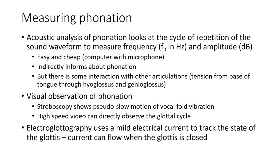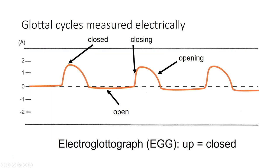You can also track the state of the glottis using electroglottography. In electroglottography, a very mild electric current is passed across the glottis using electrodes placed on the surface of the neck. When the glottis is closed, more electricity can flow, and when the glottis is open, no electricity flows. The peaks on the output curve indicate where the vocal folds are maximally closed during the glottal cycle, while the troughs represent the glottis being relatively open. So we can look at the cycle of opening and closing and also get an idea of the rate of vibration of the vocal folds.